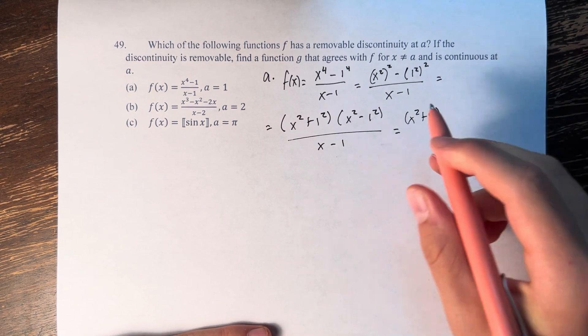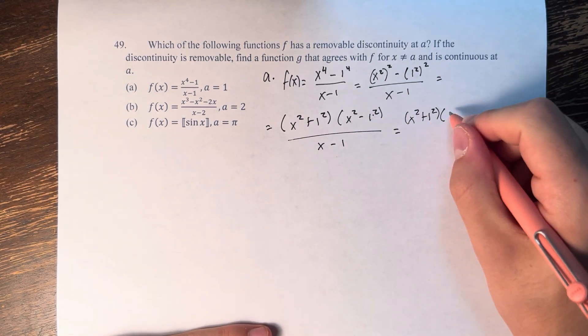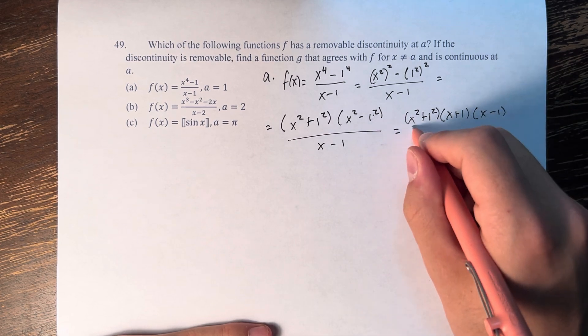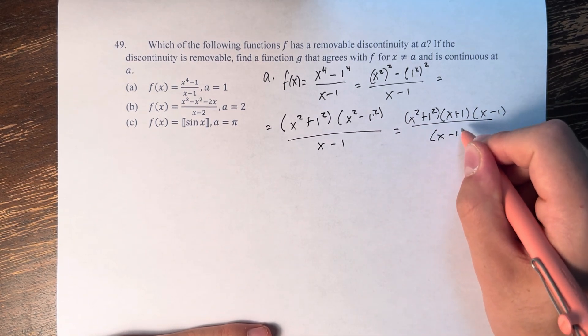We have another term of difference of two squares. So this is x squared plus 1 times, you add the two things being squared, x plus 1, and then subtract them, x minus 1.